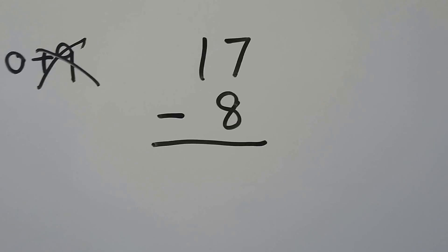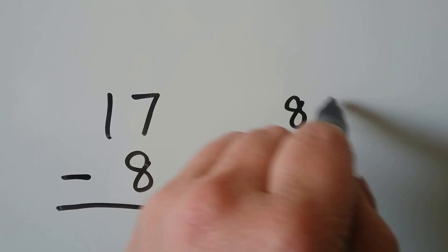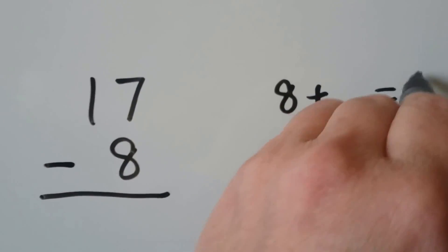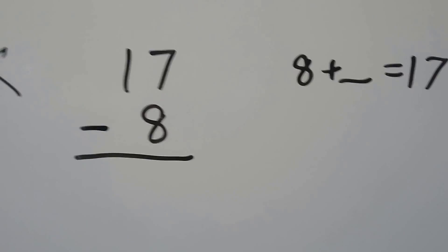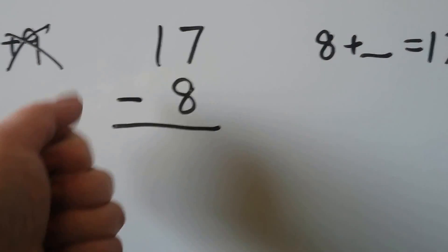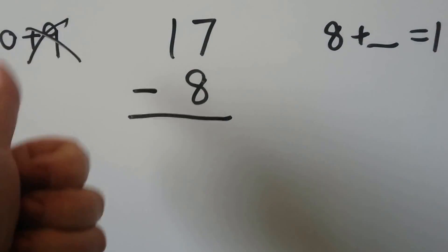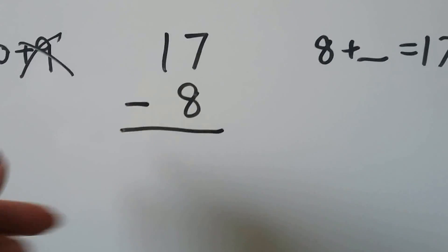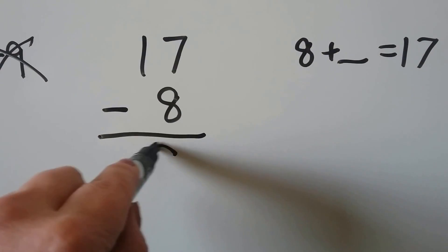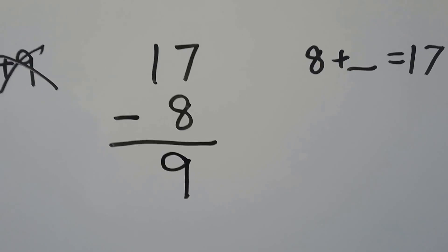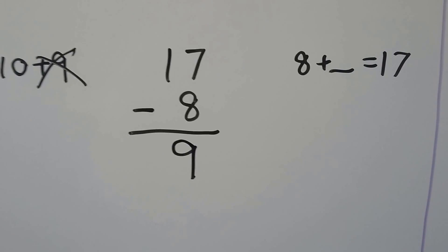17 minus 8. We can think: 8 plus some number is equal to 17. We can start at the 8 and count up: 8, 9, 10, 11, 12, 13, 14, 15, 16, 17. That was 9. 8 plus 9 is equal to 17 — we used a related addition sentence.